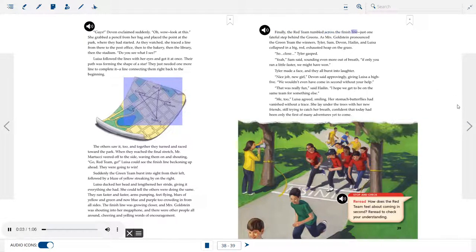Finally, the red team tumbled across the finish line, just one fateful step behind the greens. As Mrs. Goldstein pronounced the green team the winners, Tyler, Sam, Devin, Halen, and Louisa collapsed in a big, red, exhausted heap on the grass. So close, Tyler gasped. Yeah, Sam said, sounding even more out of breath. If only you ran a little faster, we might have won. Tyler made a face, and they all burst into laughter. Nice job, new girl, Devin said approvingly, giving Louisa a high five. We wouldn't even have come in second without your help. That was really fun, said Halen. I hope we get to be on the same team for something else. Me too, Louisa agreed, smiling. Her stomach butterflies had vanished without a trace. She lay under the trees with her new friends, still trying to catch her breath, confident that today had been only the first of many adventures yet to come.